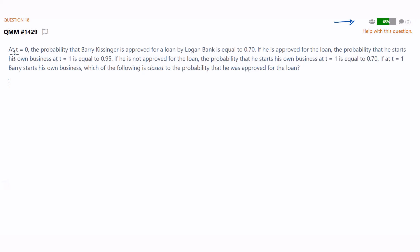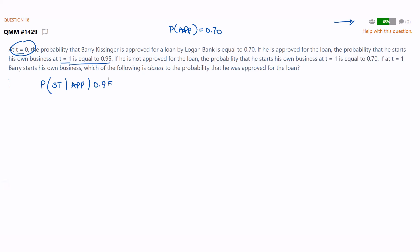They say at T0, the probability that Barry Kissinger is approved for a loan by Logo Bank is 0.7. So the probability approved is 0.7. They're telling you it's T0 - it's obvious that that's first. If he's approved for the loan, the probability that he starts his own business at T1 is 0.95. So the probability of starting his business, given he is approved, is 0.95. We have that conditional probability.